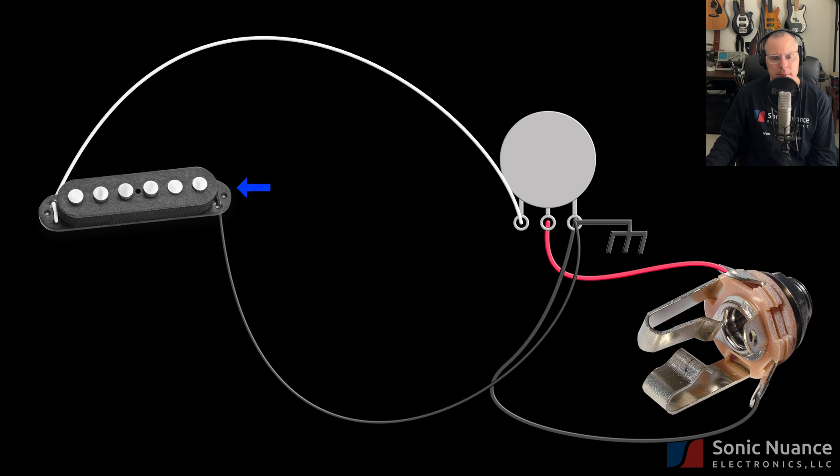We have our pickup, which is our voltage source, driving a voltage divider circuit comprised of a potentiometer. That potentiometer has its wiper tied to the output of the guitar, and the other terminal is tied to ground.